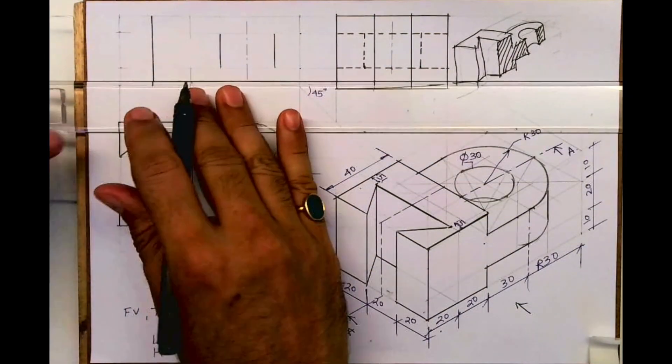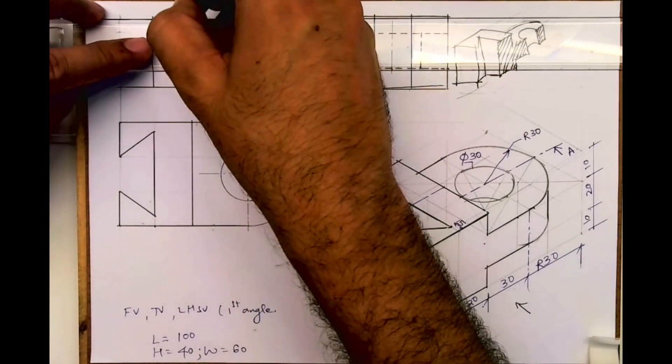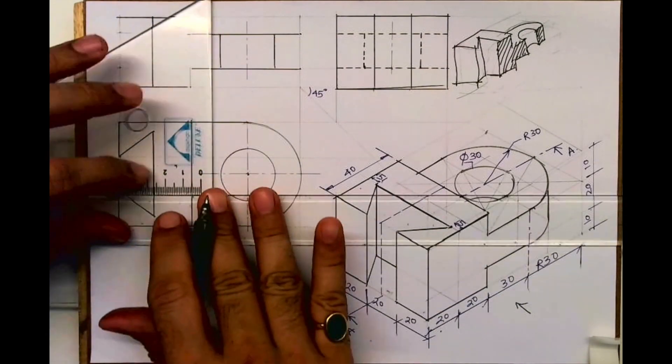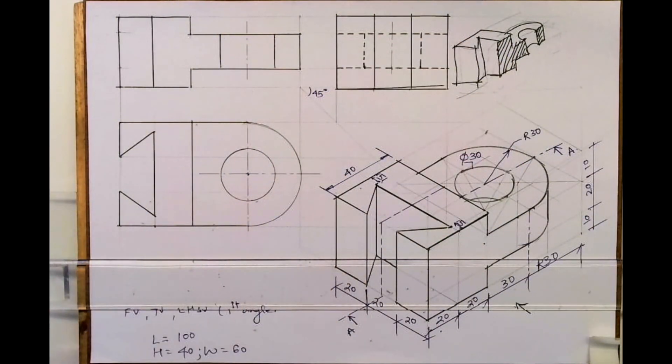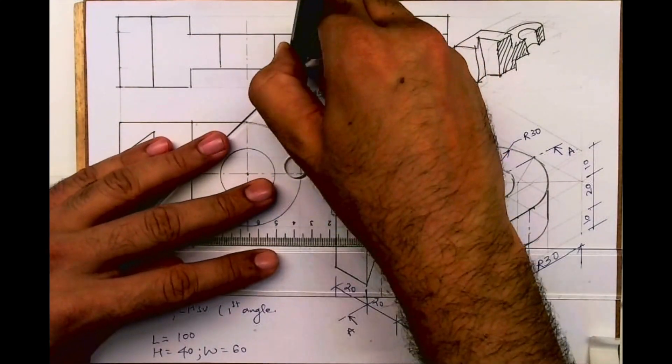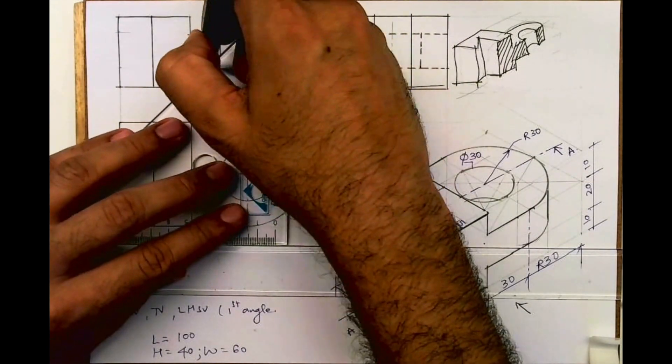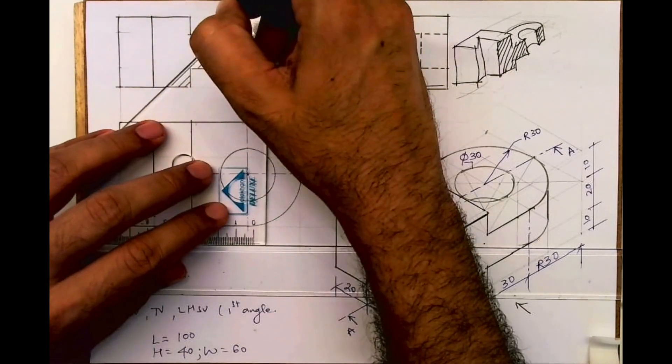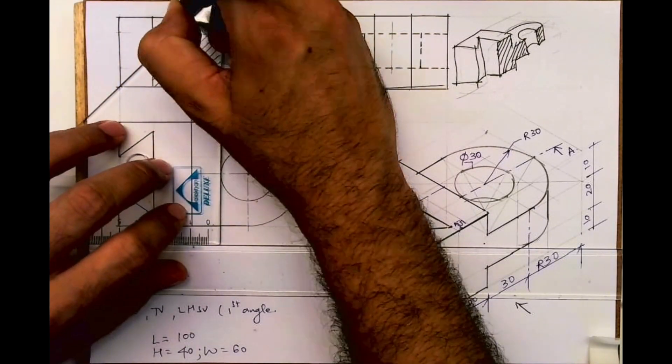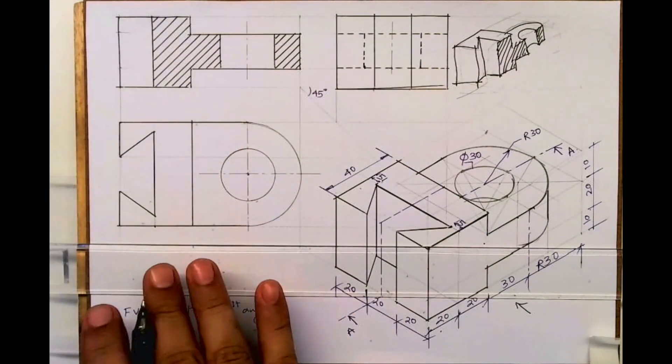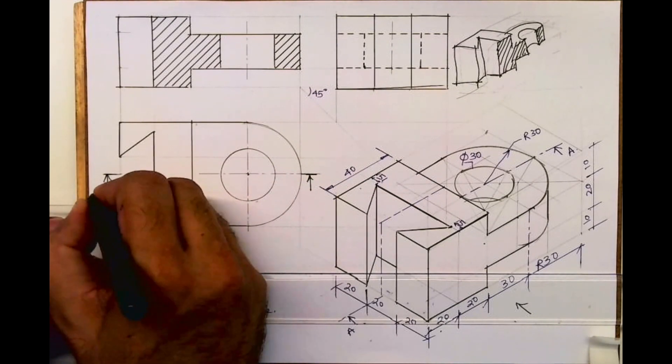This will be dark. This entire part will be dark. This will be dark. See this way it will come. And we need to do hatching. Whichever portion is getting cut, that will be hatched at 45 degree like this. So we are done with sectional front view. Top view and left hand side view.